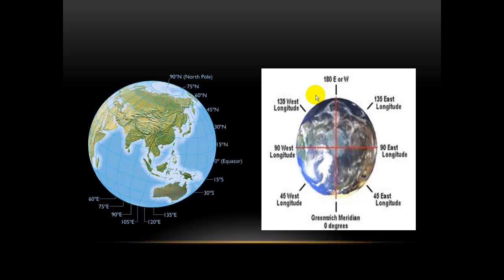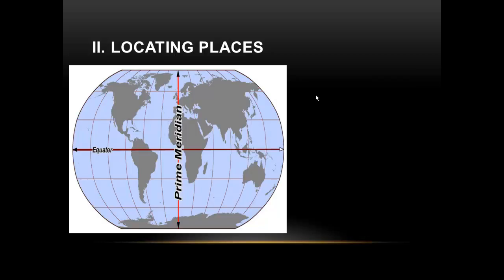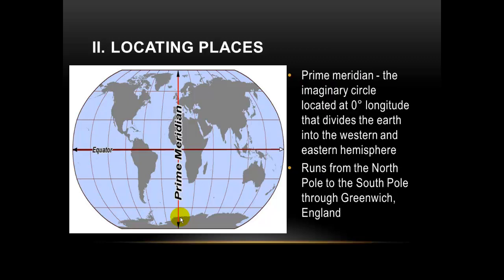These two pictures show different lines of latitude and longitude. The equator is an imaginary line located at zero degrees latitude. Going up and down the Earth is the prime meridian, which is also an imaginary line located at zero degrees longitude. The prime meridian divides the Earth between the Eastern and Western Hemispheres. It runs from the North Pole to the South Pole, going through Greenwich, England, through Africa, all the way down to the South Pole.